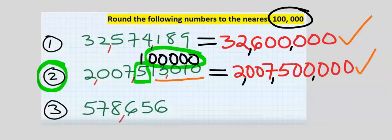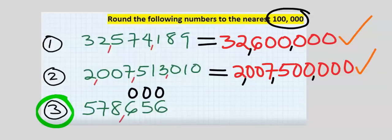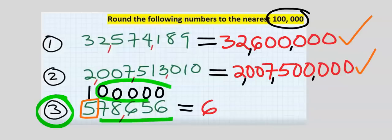Next, consider the third question. To the nearest hundred thousand, the place value becomes zero zero zero zero zero. This is the hundred thousand place and it fell on five. Five may be modified or remain the same, but seven can modify five and it will become six. Seven eight six five — six will acquire zeros.